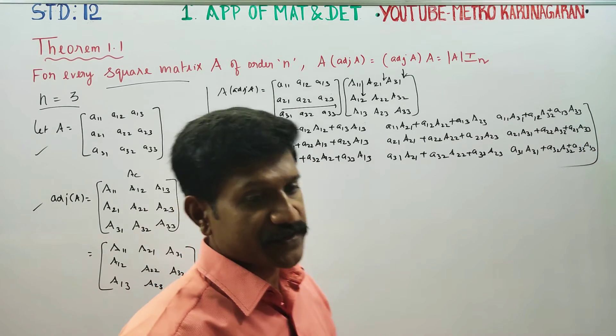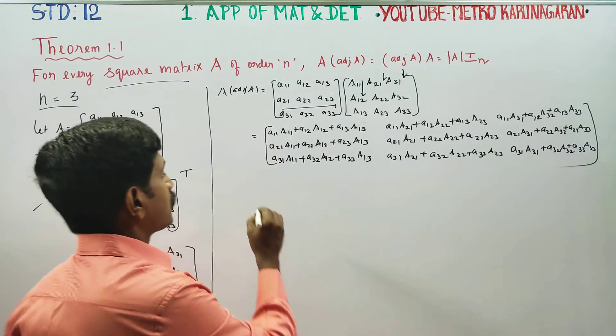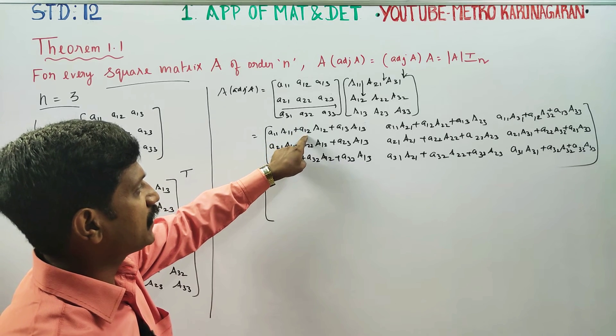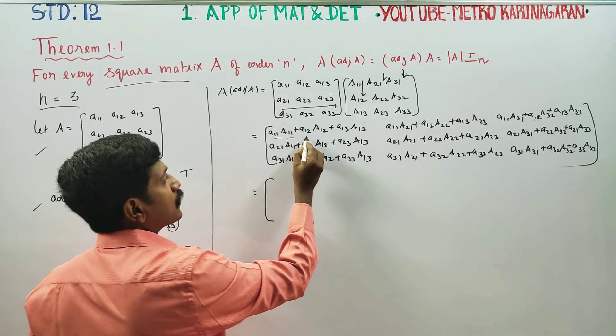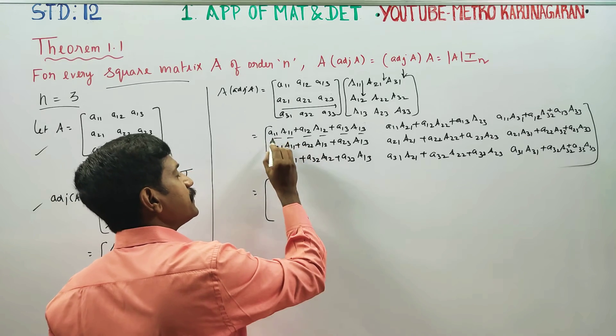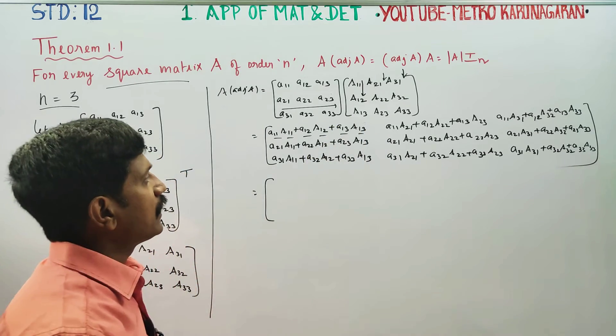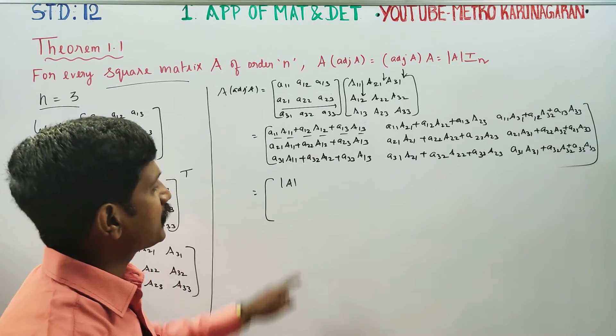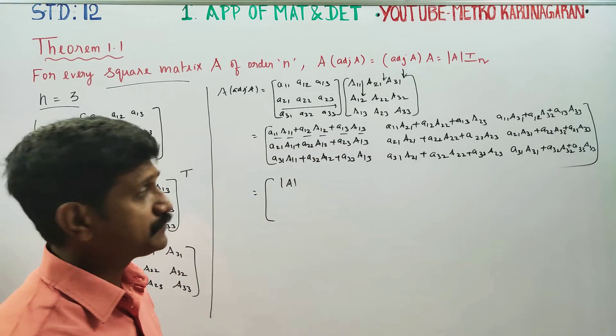Looking at this multiplication, rows into columns multiplied. After this, notice that one element times its cofactor, plus that element times its cofactor. This is 11 with 11, 12 with 12, 13 with 13. Same element with their cofactor. Element with their cofactor gives determinant A. This is the definition of determinant: element with their cofactor, multiply and add, you get determinant A.